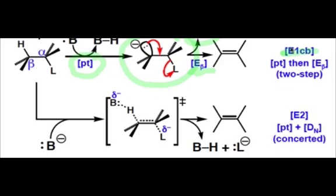If both events are synchronous, then we get the bottom pathway, and this is called the E2 pathway, because in the transition state for this mechanism, which is a one-step mechanism, two molecules are involved, the base and the substrate.